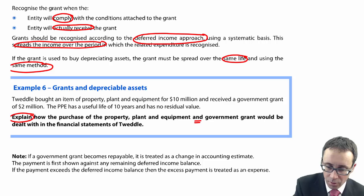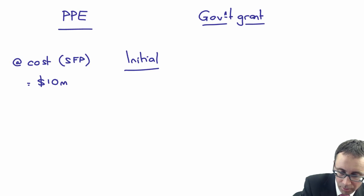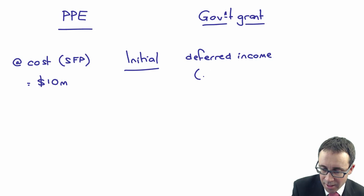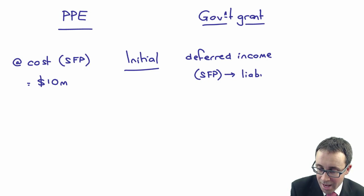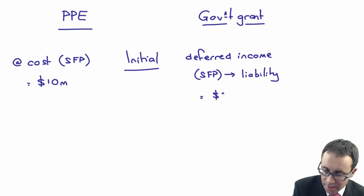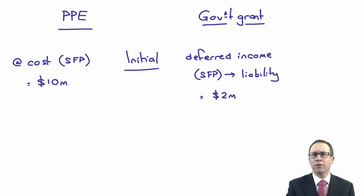For the government grant, you recognise it as deferred income. Explain to the examiner that that is on the statement of financial position as a liability figure. You recognise that at $2 million, and you can note that this is when you comply with the conditions of the grant. Here, the conditions of the grant appear to be that you use the money to purchase the property, plant and equipment. So if you bought the PPE, then clearly you have complied with the conditions of the grant.